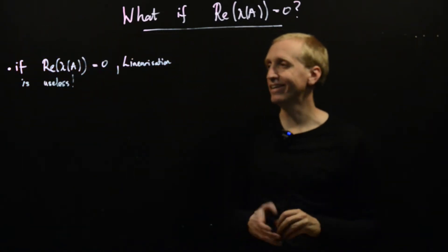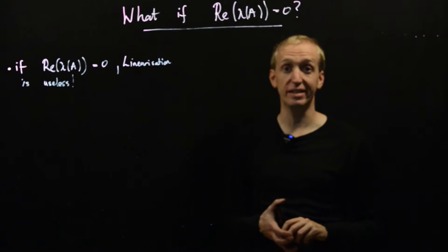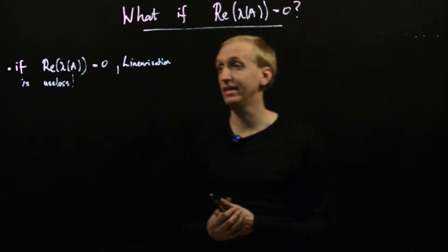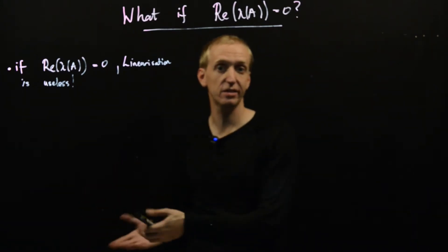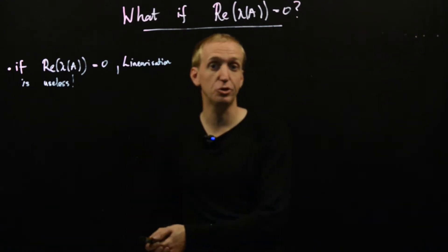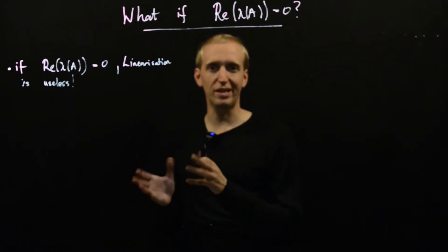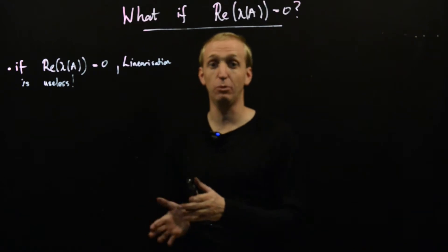It's a slightly heavy-handed way of phrasing it, but the key message here is that when we studied linear systems, and we had eigenvalues on the imaginary axis, we had this sort of intermediate, marginally stable class.